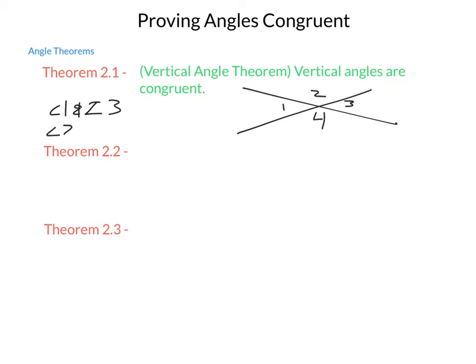or angle 2 and angle 4, are vertical angles. Now, directly across from each other is a good way of thinking about it.